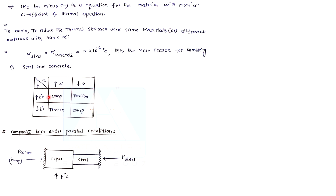If you want to compare the temperature effects, you can compare the alpha value to the alpha value. For example, let's take a block of steel and aluminium.